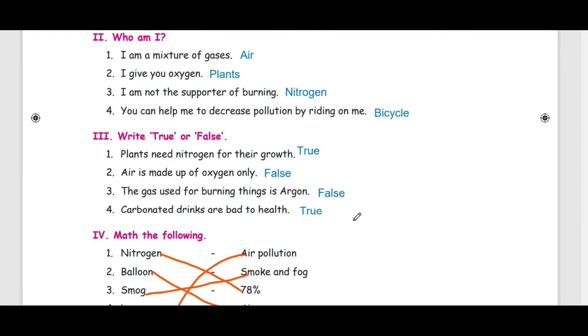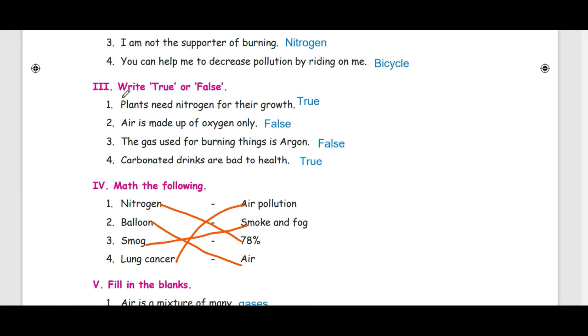If you ride bicycle, you can reduce the petrol and diesel. You can reduce the air pollution. True or False. Plants need nitrogen for their growth.